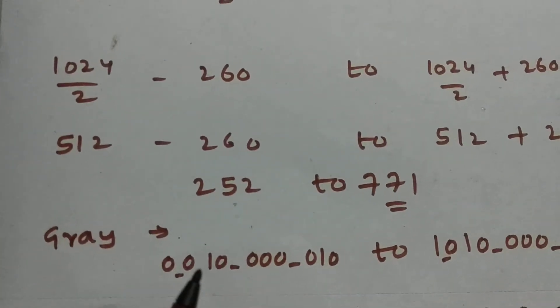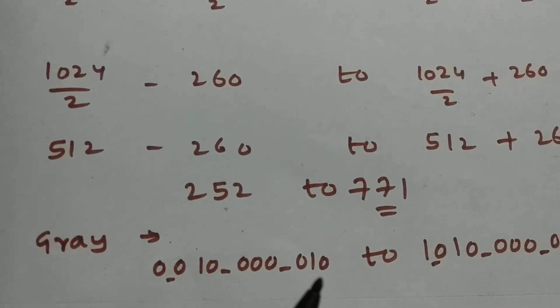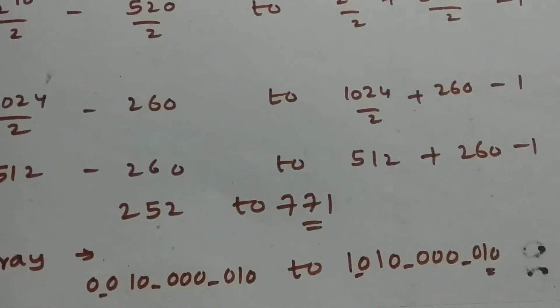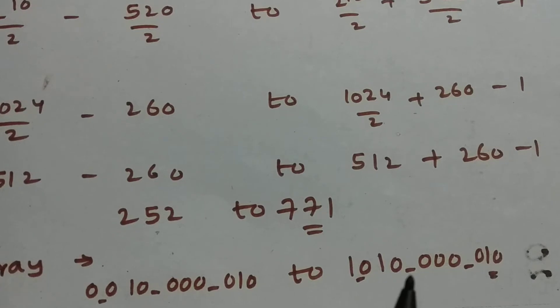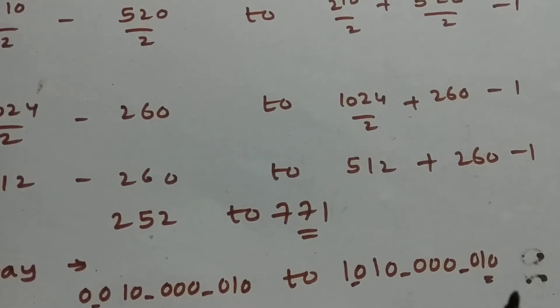So it is 001000010 and 771 in gray is 101000010.